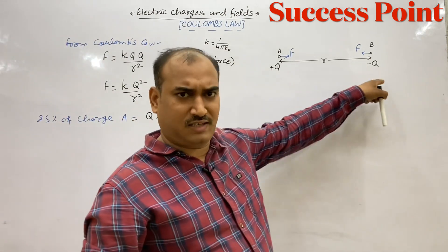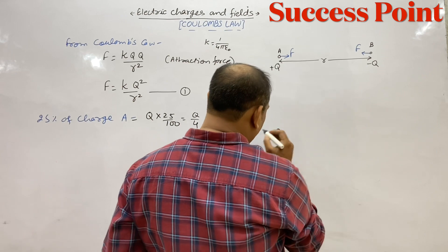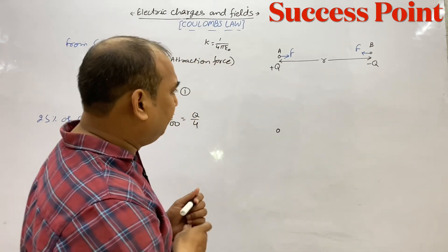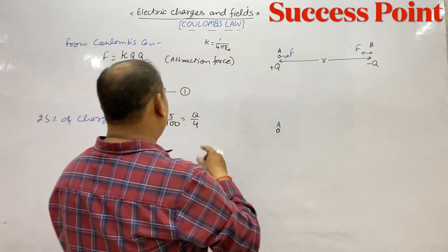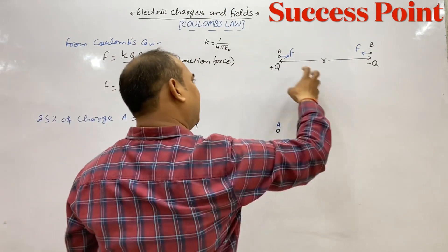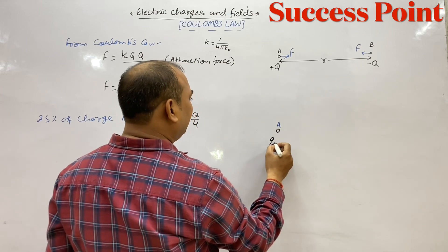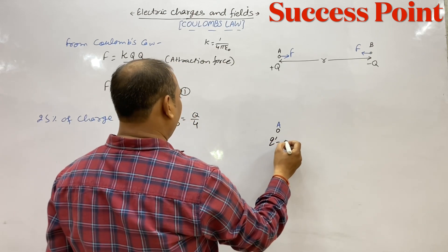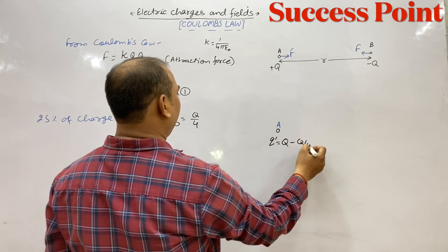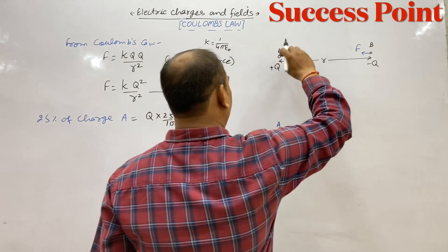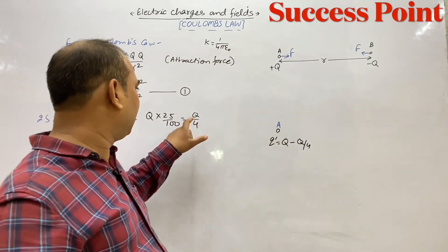A पर final charge क्या बना होगा? पहले A पर Q था, अब Q/4 निकाल के B में डालना है। तो A पर final charge = Q − Q/4 = 3Q/4 हो जाएगा।